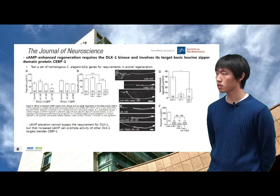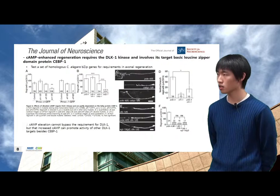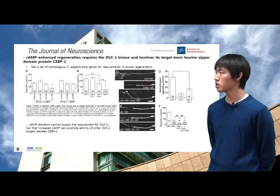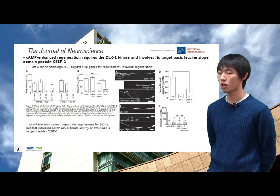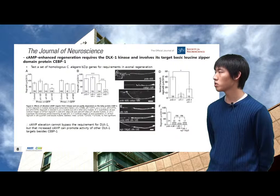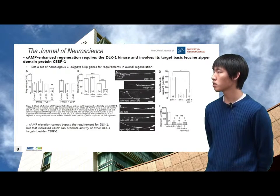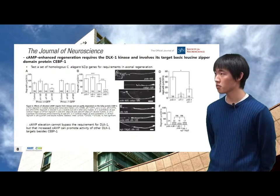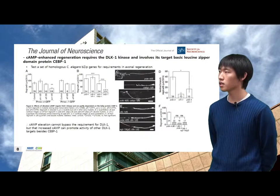Finally, they tested the requirement of the DLK-1 mitogen-activated protein kinase cascade, which is upstream of CEBP-1, an essential protein for C. elegans motor and touch axon regeneration. According to the data, normal transients of axotomy-triggered GCaMP appeared in DLK-1 mutants, and cAMP elevation cannot bypass the requirement for DLK-1, but increased cAMP can promote activity of other DLK-1 targets besides CEBP-1.